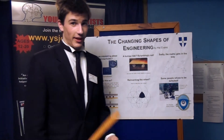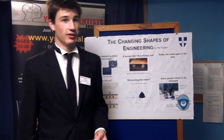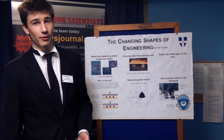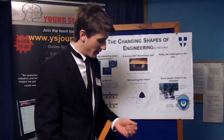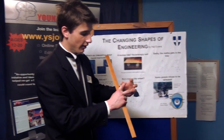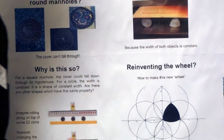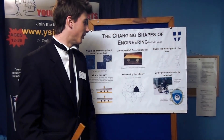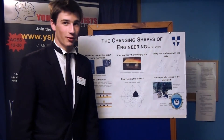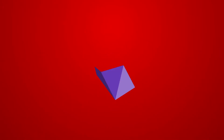There are also other applications of these shapes, such as the ability to drill a square hole with them. It might seem somewhat counter-intuitive, but if you were to put a point on this and rotate it, you would actually find the trace is a square. So, that concludes my talk on changing shapes in engineering. Thank you very much for listening.